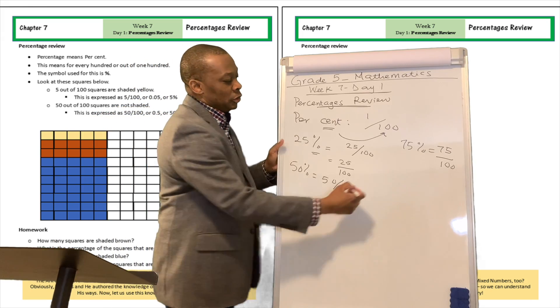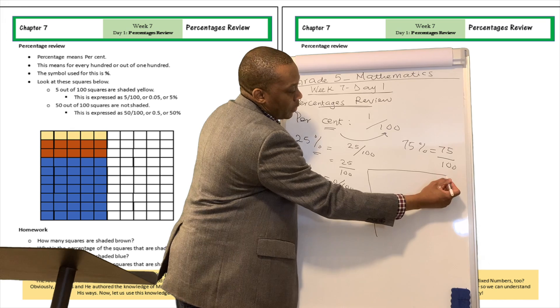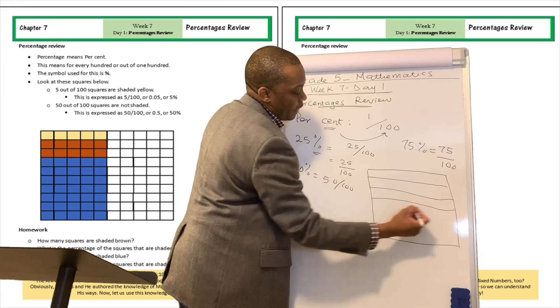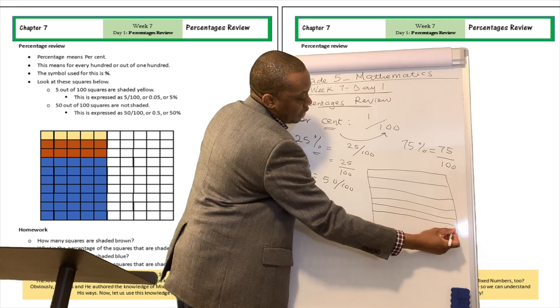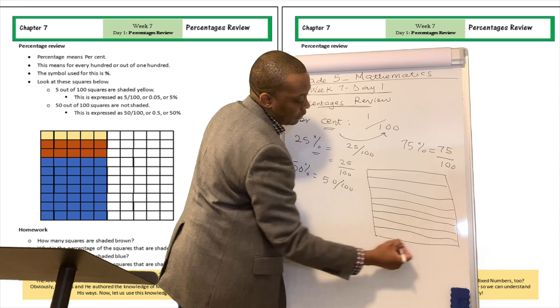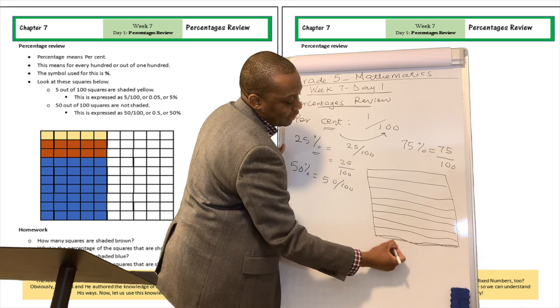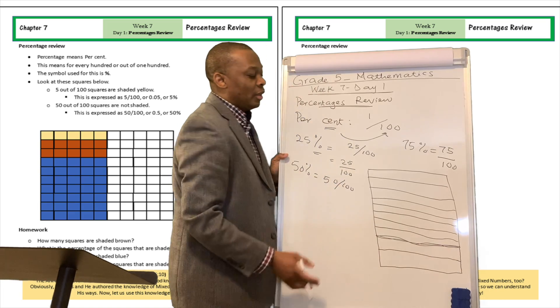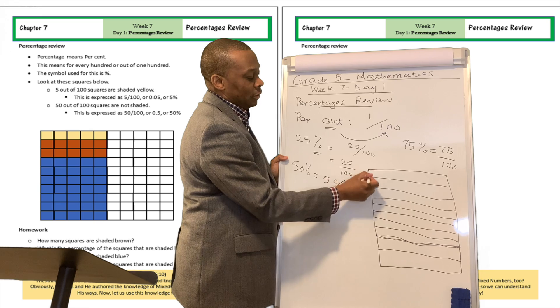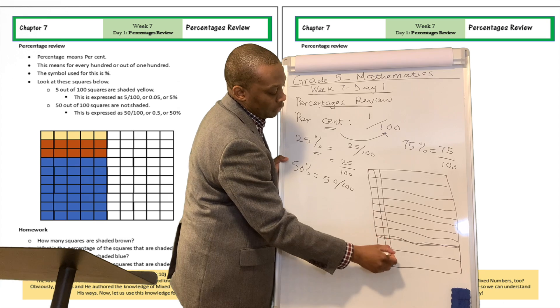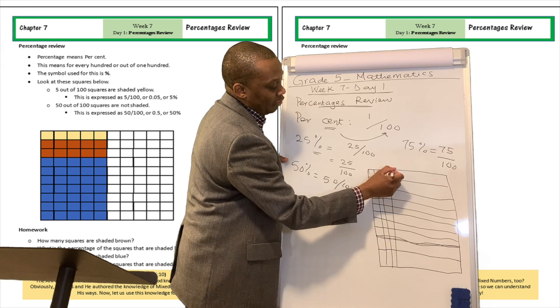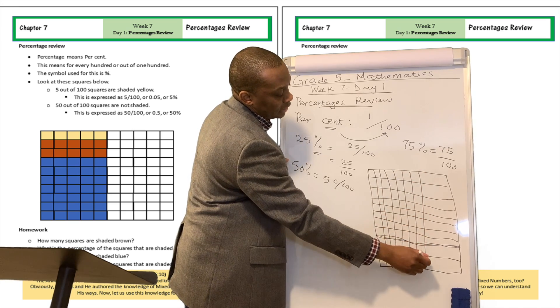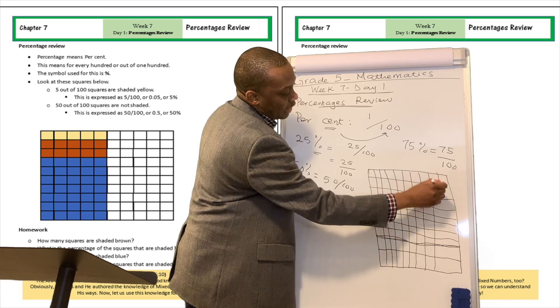Now, what does that really mean? Well, let's assume that we have 100 squares like this. So 1, 2, 3, 4, 5, 6, 7, 8, 9, and 10. So let's assume that we have 10 rows down this way, which may be broken down into 1, 2, 3, 4, 5, 6, 7, 8, 9, and 10.